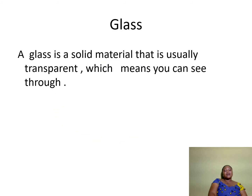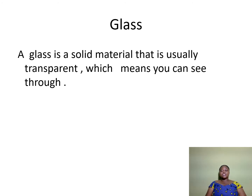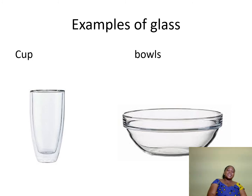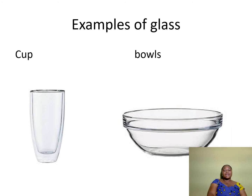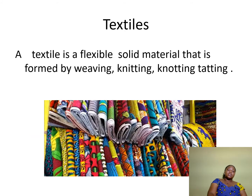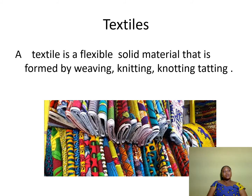The next one we're going to look at is glass. A glass is a solid material that is usually transparent, which means you can see through it. What are some examples? We have a glass cup and a glass bowl. Maybe you can get a glass bottle as well, and a glass table.